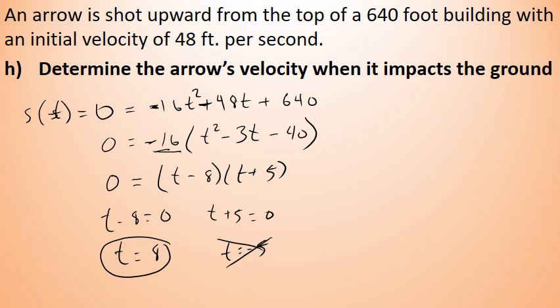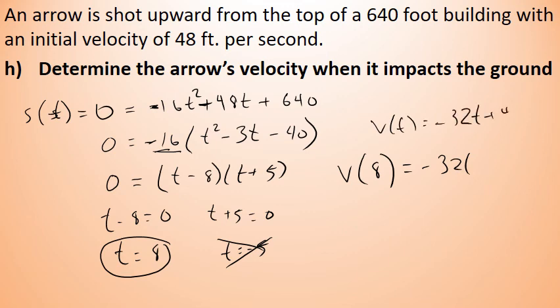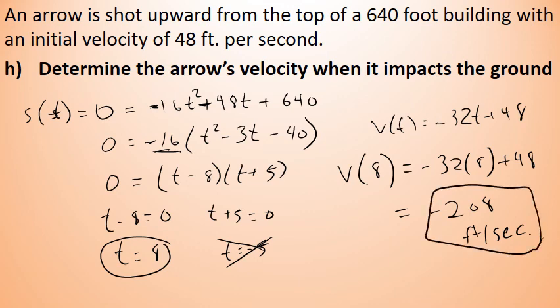We evaluate v(8) using the velocity function v(t) = negative 32t plus 48. v(8) equals negative 32 times 8 plus 48, which gives negative 208 feet per second. When the arrow impacts the ground, it is traveling at a velocity of negative 208 feet per second.